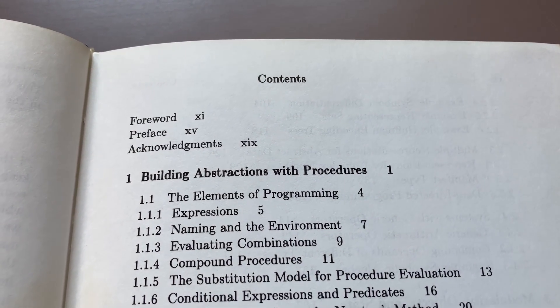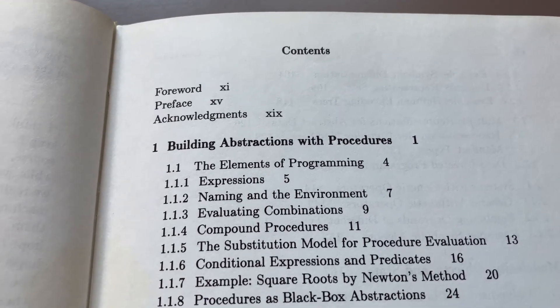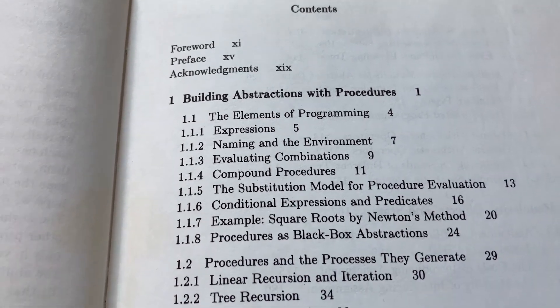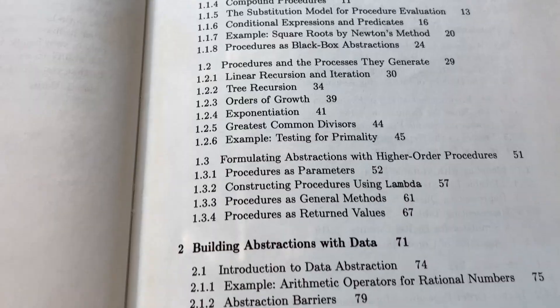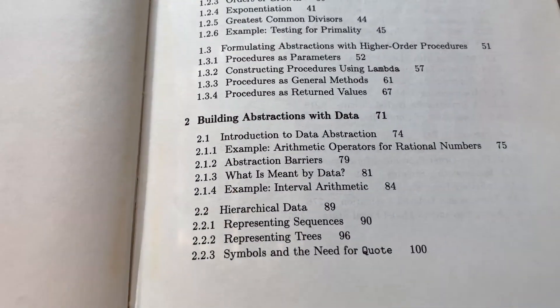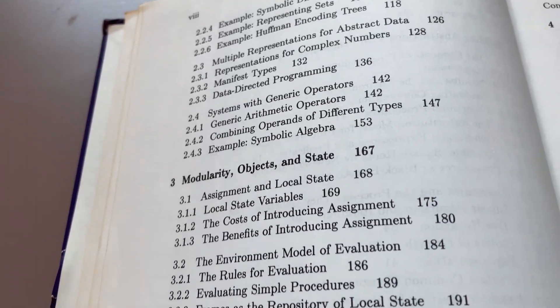This book basically covers the fundamentals of computer programming. It starts with building abstractions with procedures, then it goes on to building abstractions with data, modularity, objects, and state.